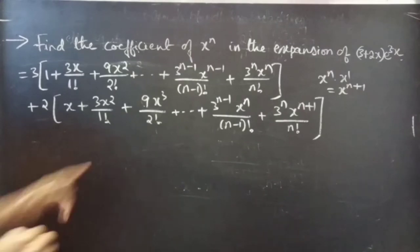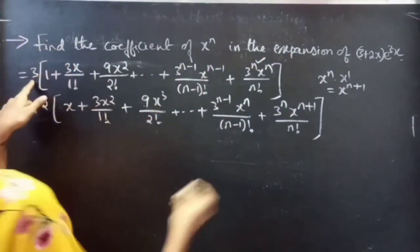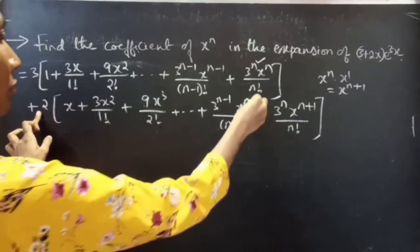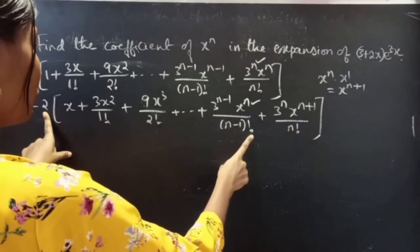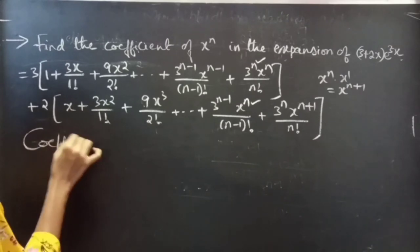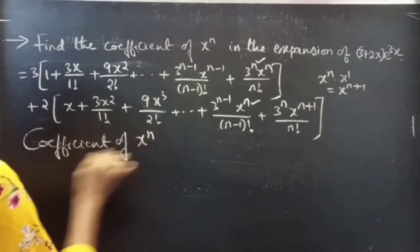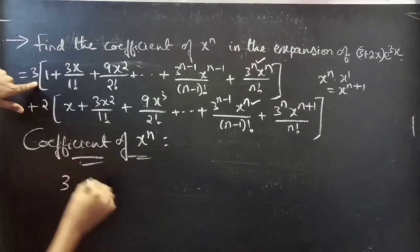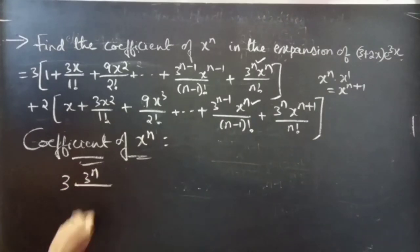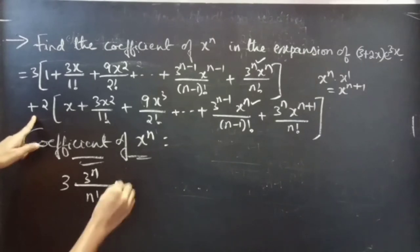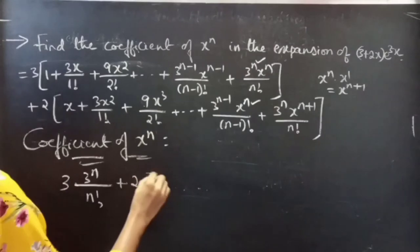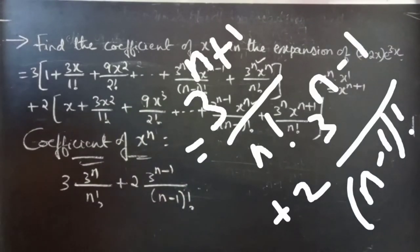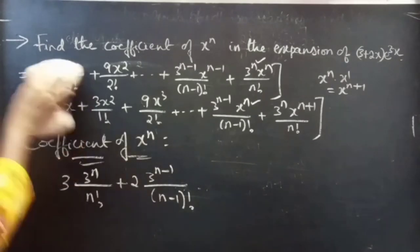Here we have to find the coefficient of x power n. The coefficient of x power n in the first part of the expansion is 3 into 3 power n by n factorial, and in the second part you have 2 into 3 power (n minus 1) by (n minus 1) factorial. So the coefficient of x power n in the expansion of the given expression equals 3 into 3 power n by n factorial plus 2 into 3 power (n minus 1) by (n minus 1) factorial.